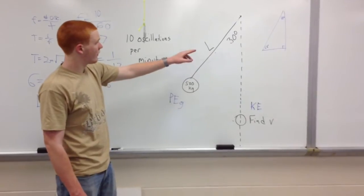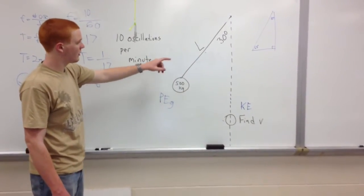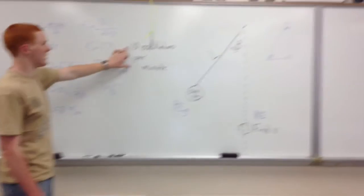We're starting with an angle of 30 degrees, the object weighs 500 kilograms, we do not know the length of the string to the object, but we do know it makes 10 oscillations per minute.